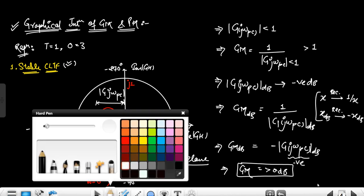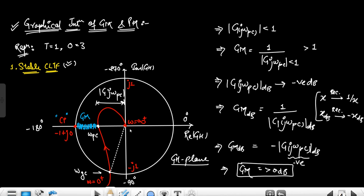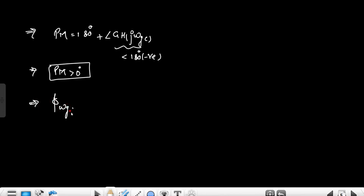Now let's understand phase margin graphically. Phase margin is defined as 180° plus the angle at the gain crossover frequency, measured in the clockwise sense. The angle at the gain crossover frequency is less than 180° in magnitude on the negative side. So 180° plus a quantity less than 180° in magnitude gives a result greater than 0°. That's why the phase margin is greater than 0° for a stable CLTF. The angle of ωgc should be less than 180° in negative for phase margin to be positive.